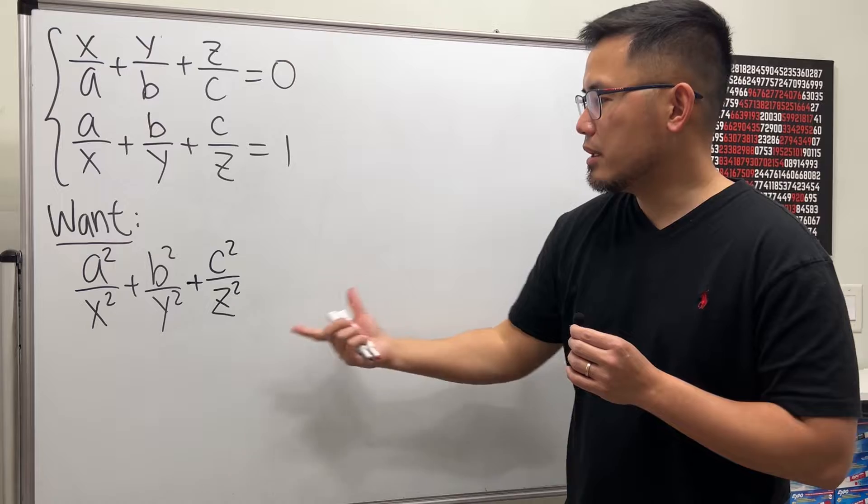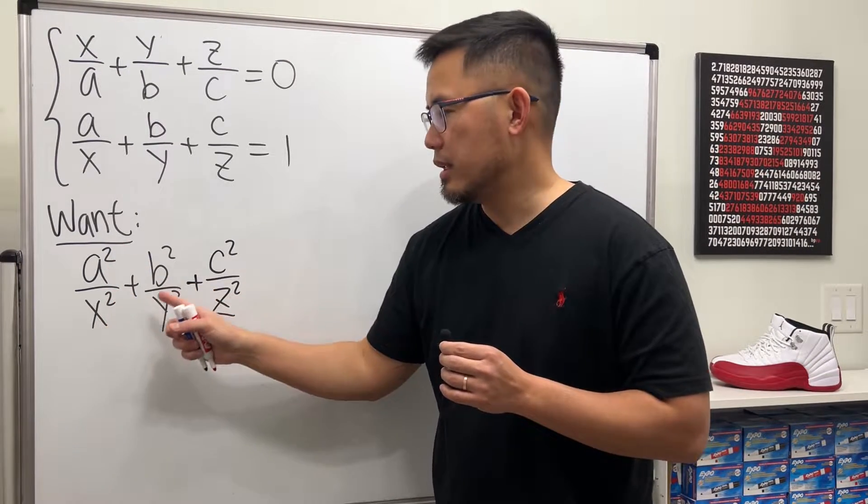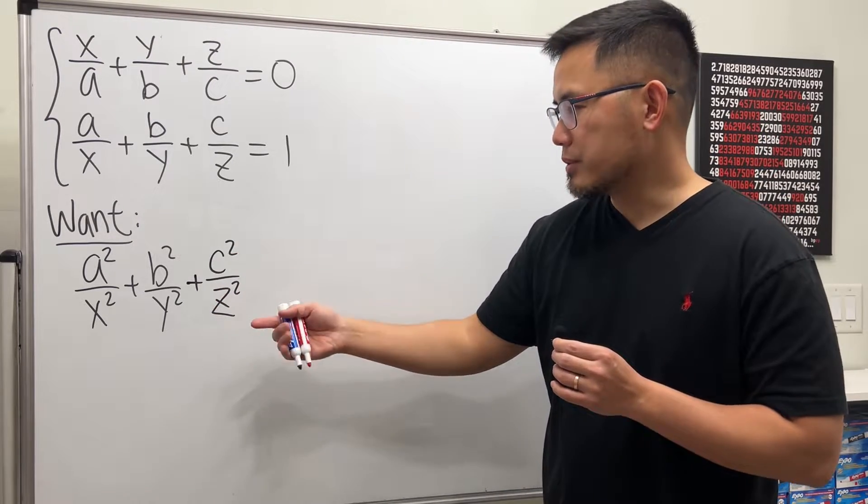Pretty cool in my opinion. And then here, we are trying to get a squared over x squared, and then b squared over y squared plus c squared over z squared. So now, check this out.